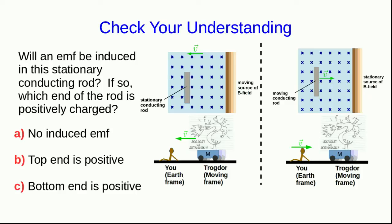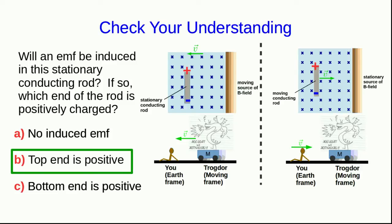the B-field is stationary, but the conducting rod is moving. And now we know exactly what happens, because V cross B — you can use the right-hand rule and confirm that the forces on positive charges in that conducting rod will be up, and so the top end of the rod will be positively charged. And so you must see that as well in your reference frame, even though the conducting rod is stationary in your frame. So the top end is positive.